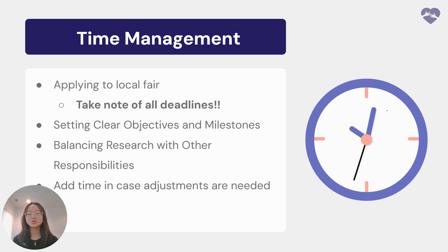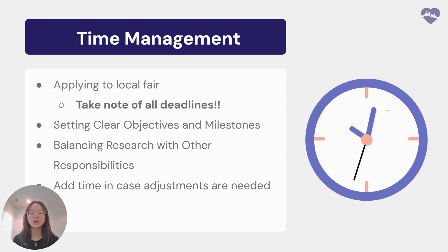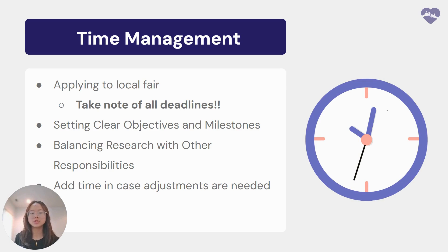In short, effective time management means planning ahead, keeping track of deadlines, staying organized with your tasks, and being adaptable when things don't go exactly as planned. This will not only help you successfully complete your project, but also reduce stress throughout the process.